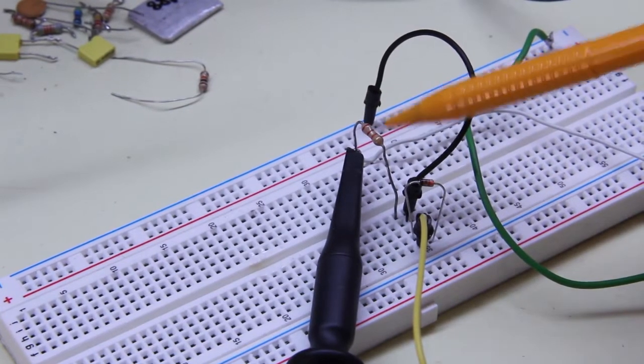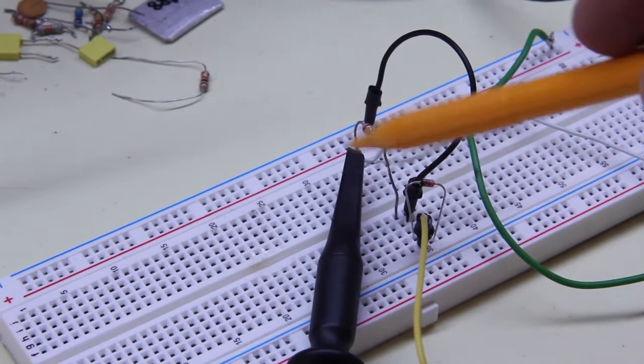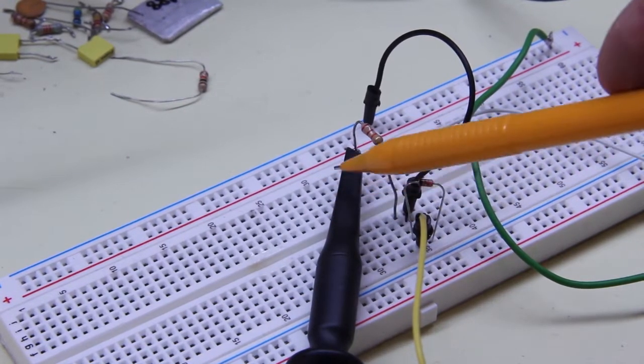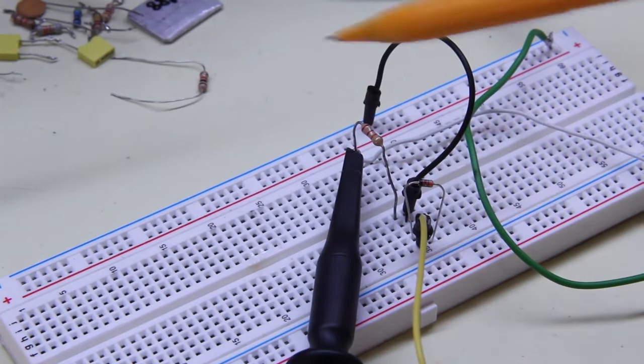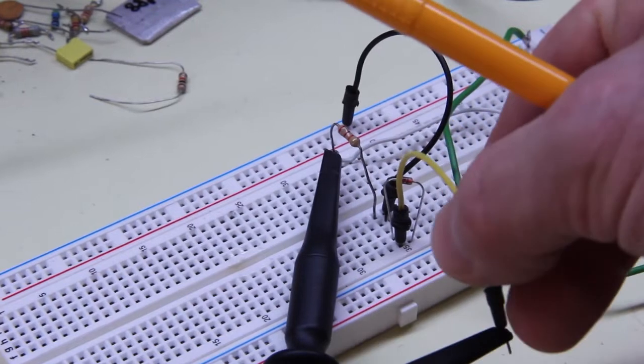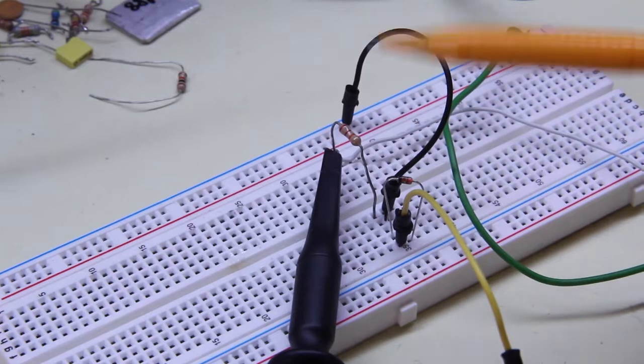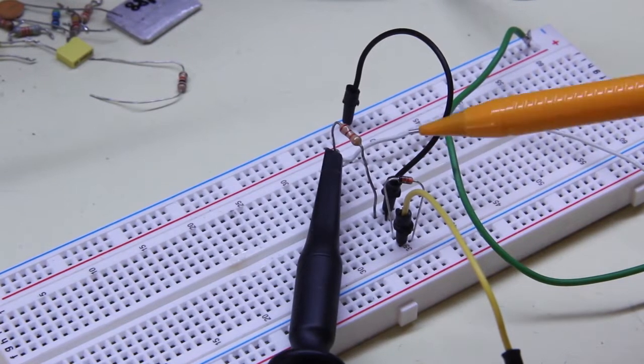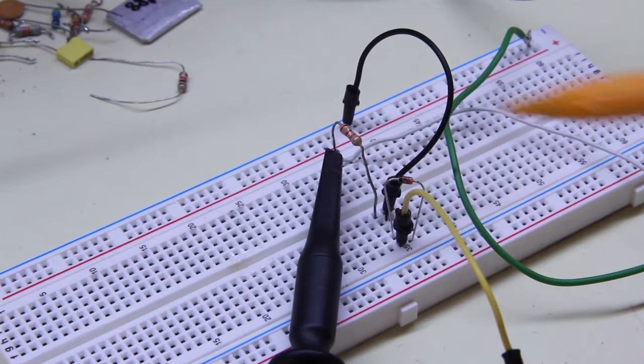Here we have a resistor in series with the diode, and here a probe reads the signal coming from the amplifier and the triangular waveform, and another probe is connected here to the cathode of the diode parallel to the diode to read the voltage across the diode.